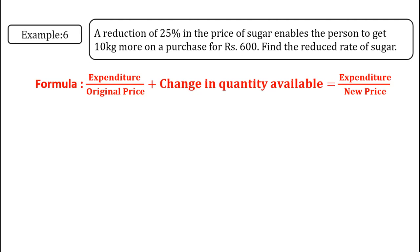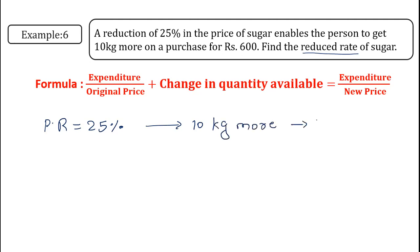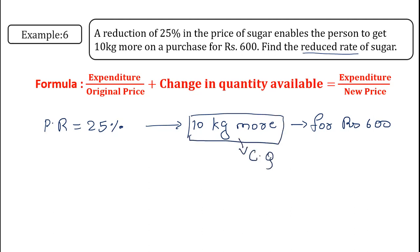A reduction of 25 percent in the price of sugar enables a person to get 10 kg more on a purchase of rupees 600. We have to find the reduced rate of sugar — that is, the new price of sugar. Since there is a price reduction of 25 percent, the man is able to purchase 10 kg more sugar for rupees 600. The change in quantity is 10 kg and the expenditure is rupees 600.